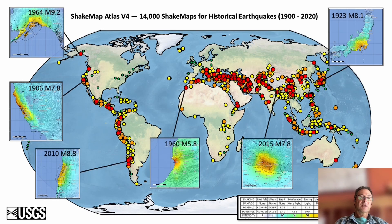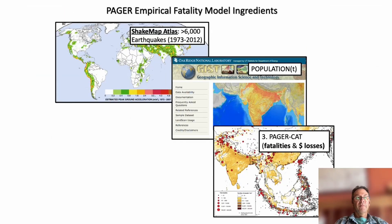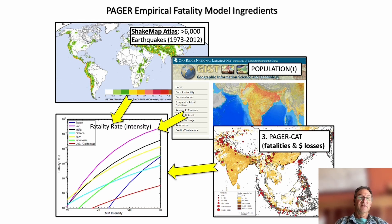We go back in time, generate ShakeMaps for past earthquakes, and calibrate those against shaking, population, and losses for each particular earthquake to derive country-specific fatality rates or economic loss rates. These can then be used in the PAGER system and by other loss modelers for calibration, which feeds back to better long-term risk analysis.